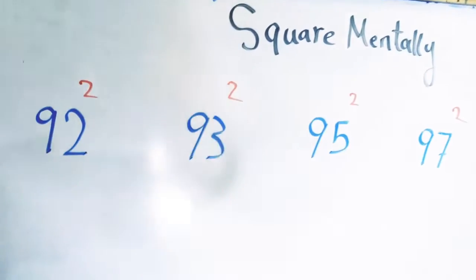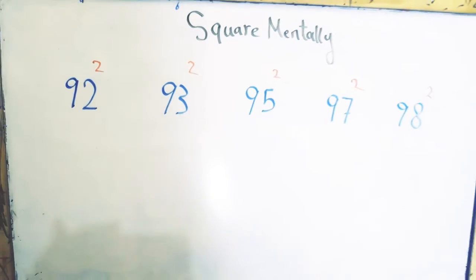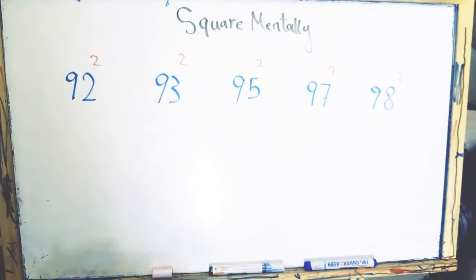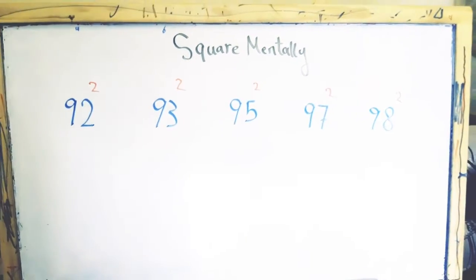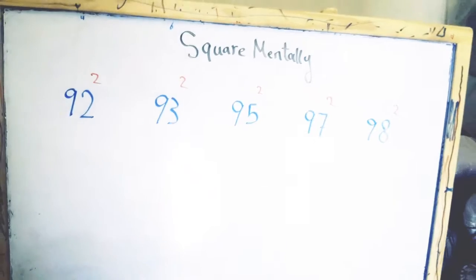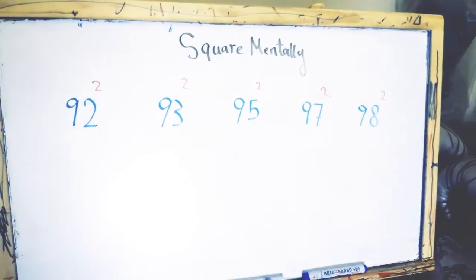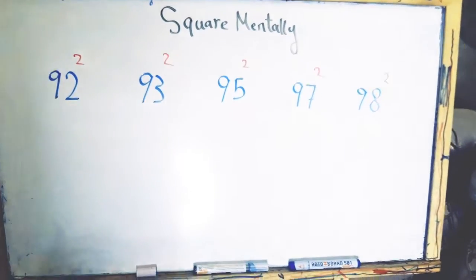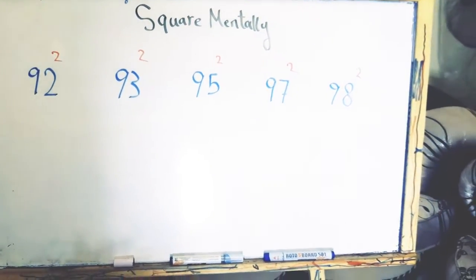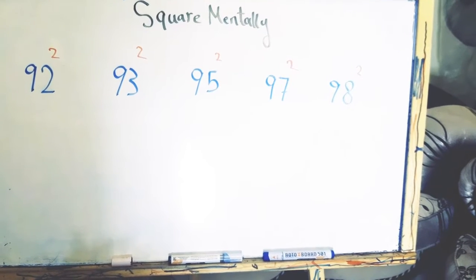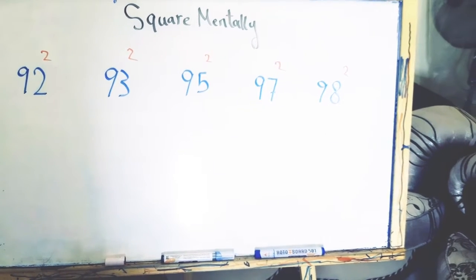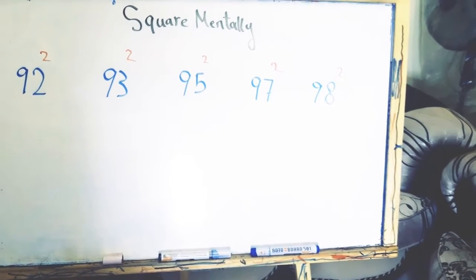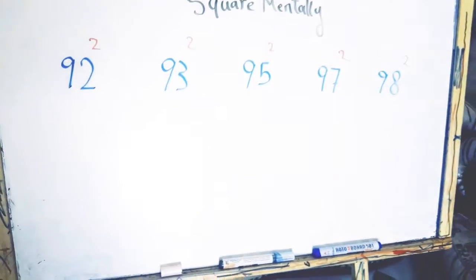Today we are talking about the numbers located between 90 and 100. And when we are talking about the numbers between 90 and 100, we mean 91, 92, 93, 94, 95, 96, 97, 98, and 99.